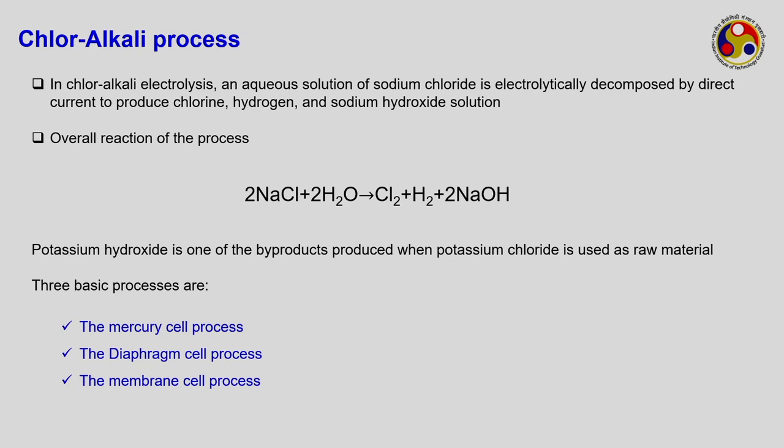In the chloroalkali process, these older methods have been replaced because more chlorine gas is required than was theoretically achievable. The name 'chloroalkali' comes from the fact that the primary product is chlorine gas, and the other product is alkali — specifically sodium hydroxide (NaOH) — formed along with the chlorine. Aqueous solution of sodium chloride is electrolytically decomposed by direct current to produce chlorine, hydrogen, and sodium hydroxide solution.